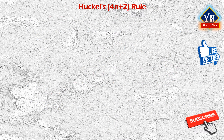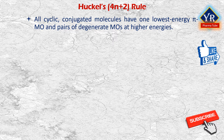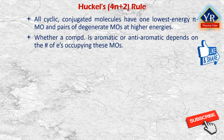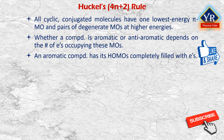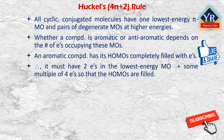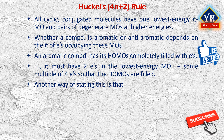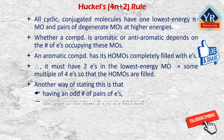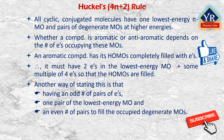Hückel's rule, or the 4n+2 rule: all cyclic conjugated molecules have one lowest energy pi molecular orbital and pairs of degenerate molecular orbitals at higher energies. Whether a compound is aromatic or anti-aromatic depends on the number of electrons occupying these molecular orbitals. An aromatic compound has its highest occupied molecular orbitals completely filled with electrons. Therefore, it must have two electrons in the lowest energy molecular orbital plus some multiple of four electrons so that the highest occupied molecular orbitals are filled.